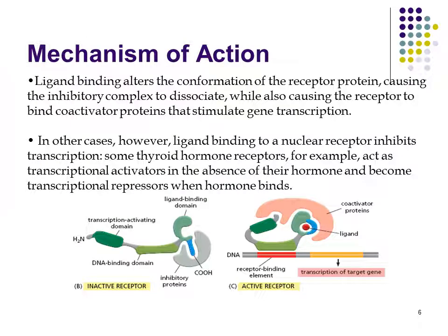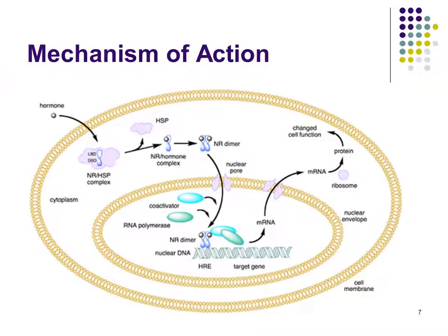Regarding the mechanism of action: ligand binding alters the conformation of the receptor protein, causing the inhibitory complex to dissociate while also causing the receptor to bind co-activator proteins that stimulate gene transcription. In other cases, however, ligand binding to a nuclear receptor inhibits transcription. Some thyroid hormone receptors, for example, act as transcriptional activators in the absence of their hormones and become transcriptional repressors when hormones bind. As you can see in the picture, the inactivated receptor and the active receptor mechanism of action can be seen in this diagram.